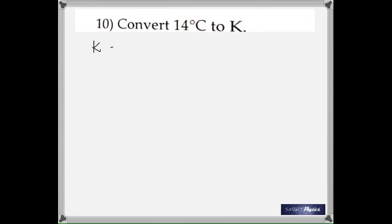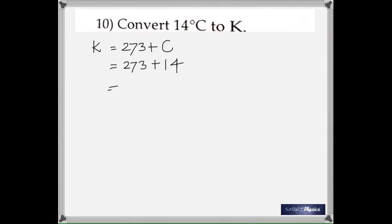Convert 14 degrees Celsius to Kelvin by adding 273, giving 287 Kelvin.